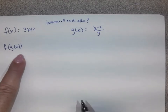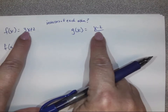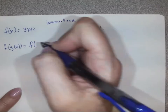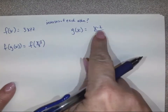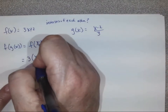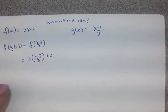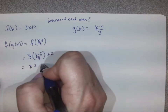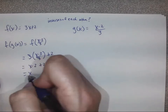When we compute f(g(x)), we take g(x) and plug it into f(x). So we have f at (x minus 2) over 3, plugging it in wherever our x's are. That gives us 3 times (x minus 2) over 3 plus 2. The 3's cancel and we get x minus 2 plus 2, and the 2's cancel, leaving us with x.